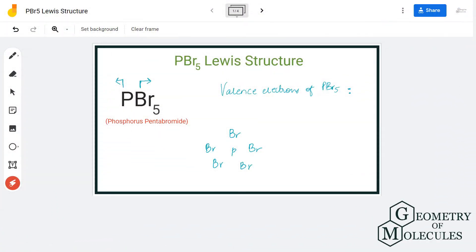Hi guys, today in this video we are going to look at the Lewis structure for PBr5, the chemical formula for phosphorus pentabromide. It is made up of one phosphorus atom and five bromine atoms.